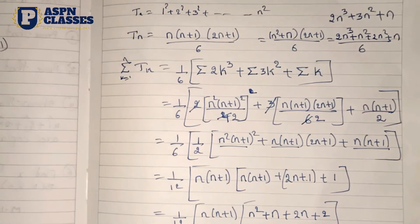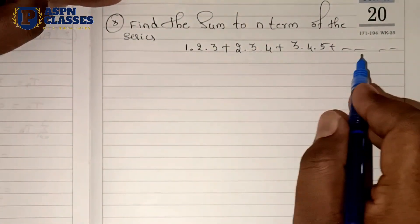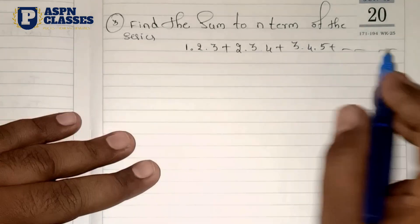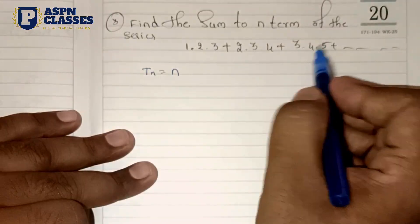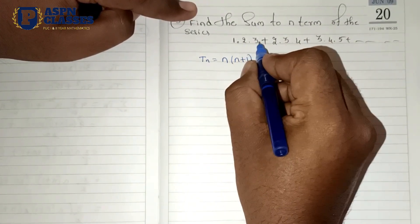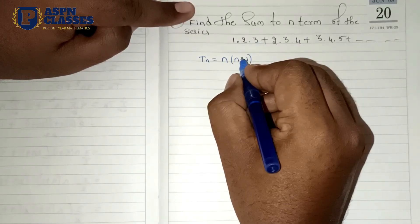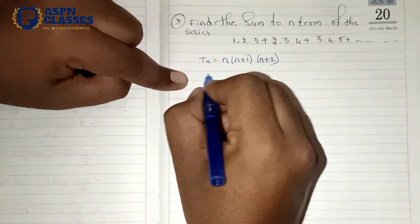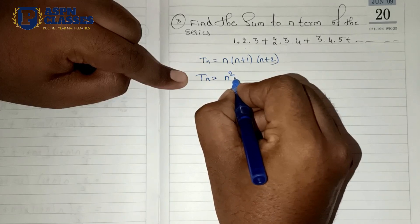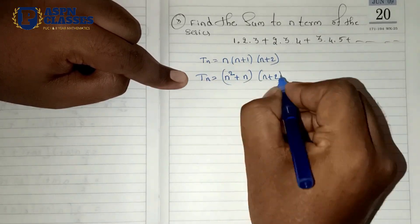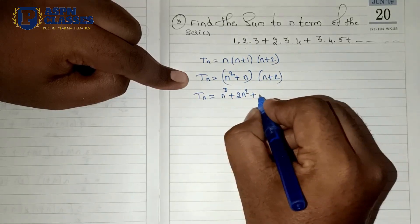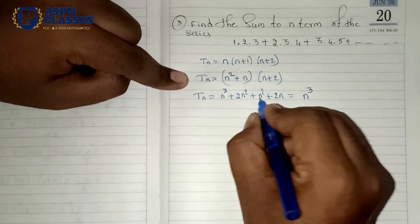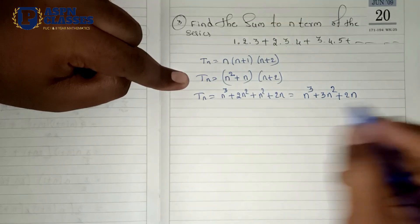Next question — this is also very important, with more chances for 4 marks. Find the sum of the n terms of the series: 1·2·3, 2·3·4, 3·4·5, …, n(n+1)(n+2). The nth term Tn = n(n+1)(n+2). Expanding: n into n+1 gives n²+n, then multiplied by n+2 gives n³ + 3n² + 2n.